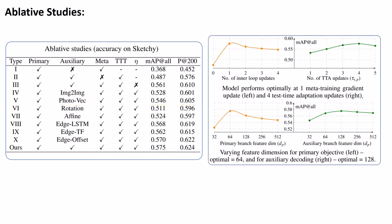Ablating the meta-learning gradient update steps, we find one to be optimal, whereas test-time training needs four. Also, 64 proves to be an optimal feature dimension for discriminative learning, unlike auxiliary branch, which is 128.